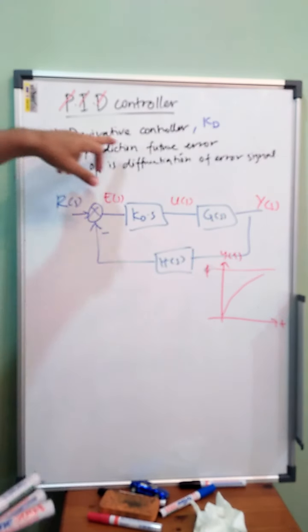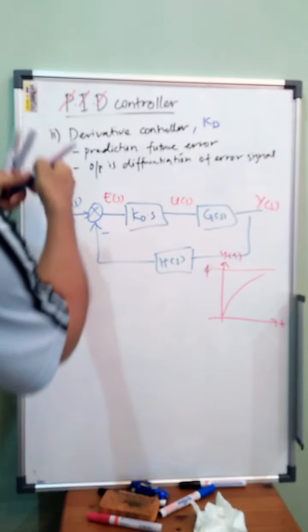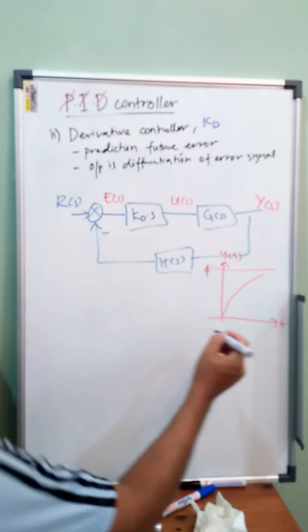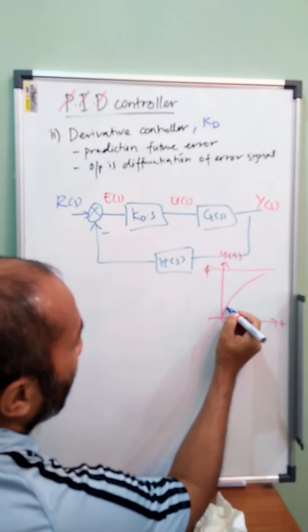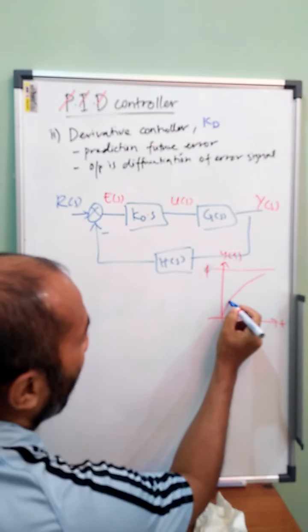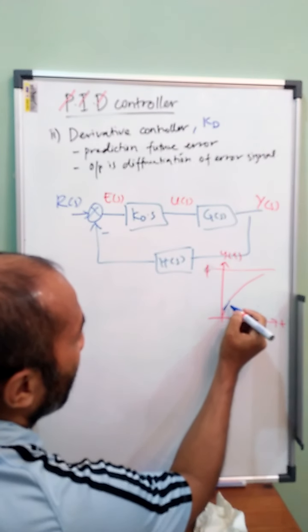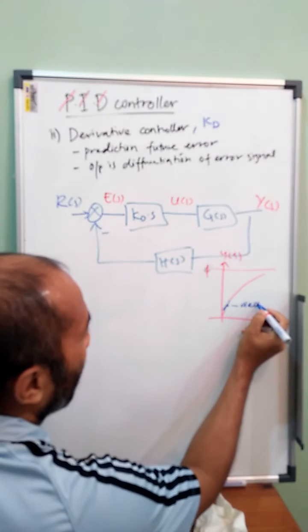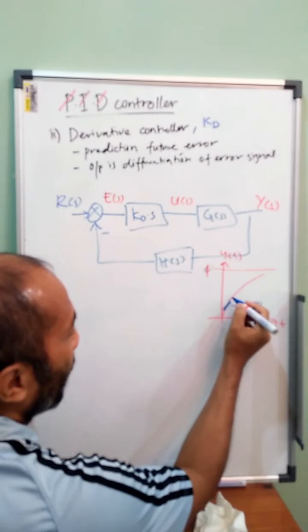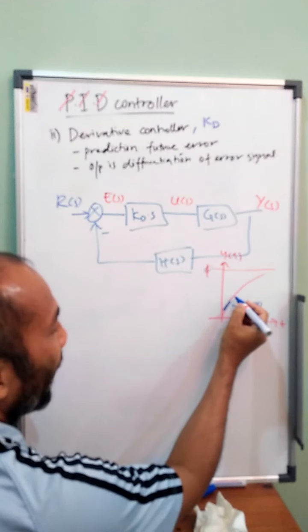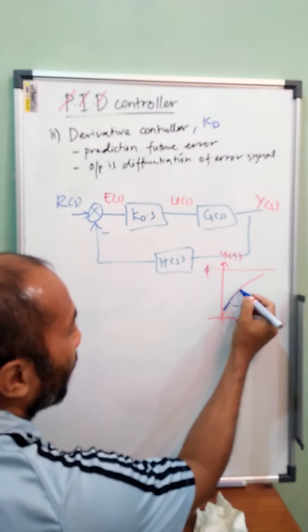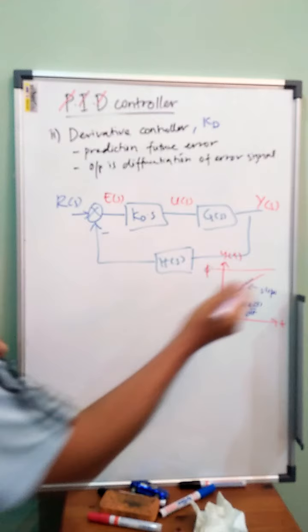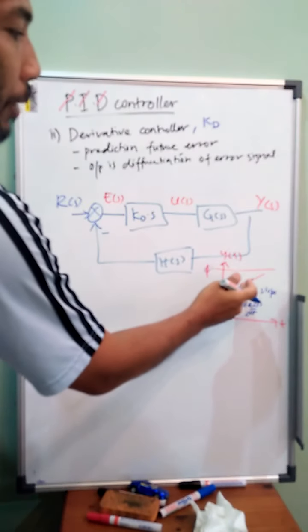In derivative controller they will use slope. So we know that differentiation means the acceleration of the error, it's error acceleration. Let's say we want to predict the error here. The differentiation of error, de over dt, here we can predict the future. We predict here slope, the same slope of error. By knowing the slope we can predict future error.